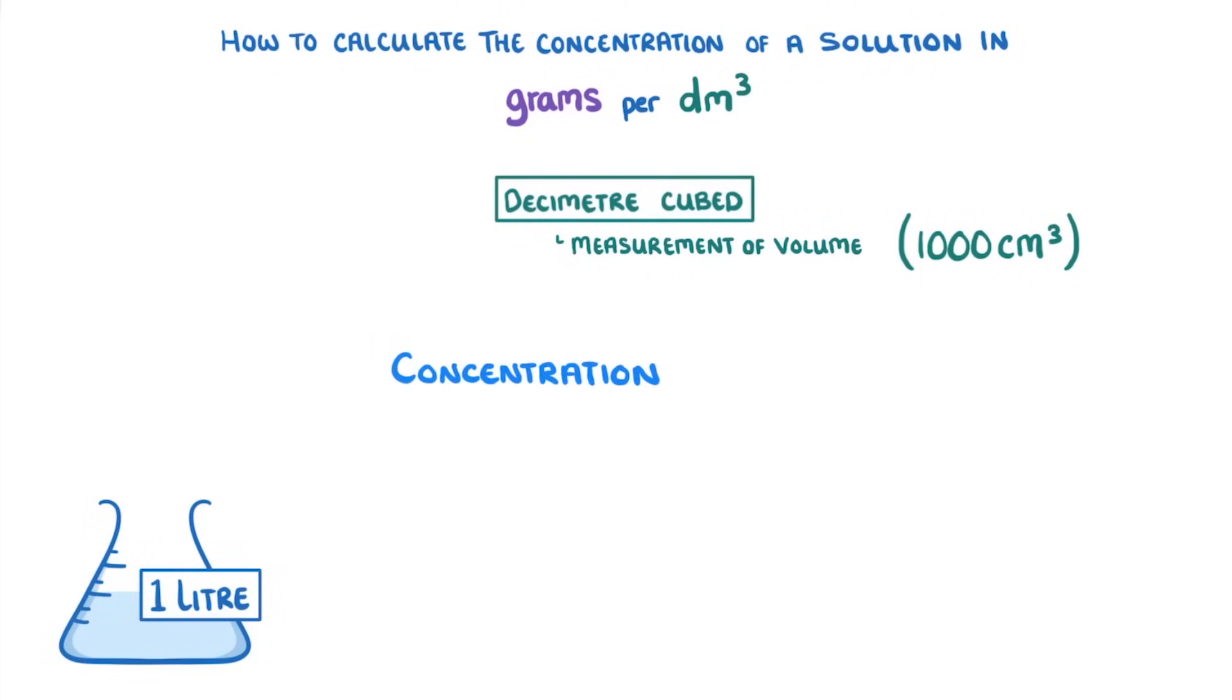Now the equation for concentration is mass divided by volume, which we can put into a formula triangle like this, with mass being measured in grams and volume in decimetres cubed.